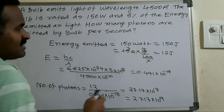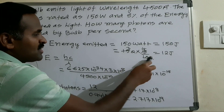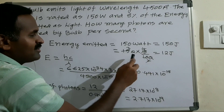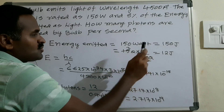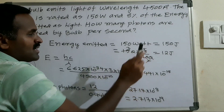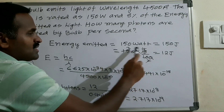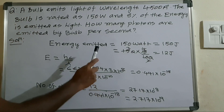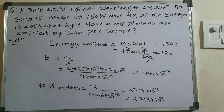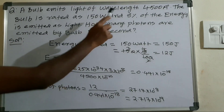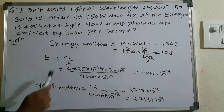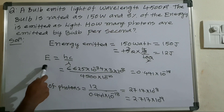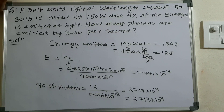After simplification — zeros cancel and the calculation gives 12 joules. So the energy emitted as light is 12 joules per second. The wavelength given is 4500 Angstroms.